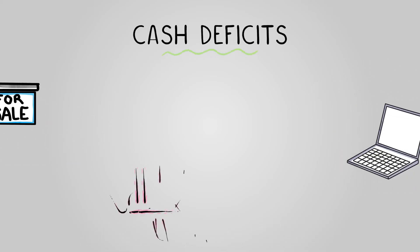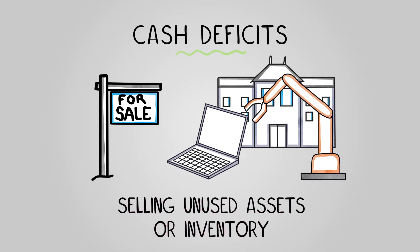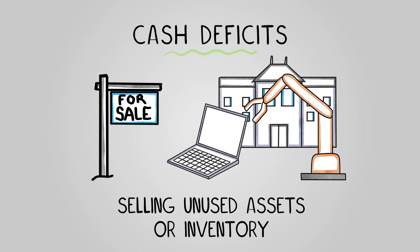Assets that are not essential to the business can be sold to improve cash flow. This could include machinery or even property. We can also sell existing inventory, as this can cost a lot to maintain and there is always waste, so selling any excess can be a short-term solution.